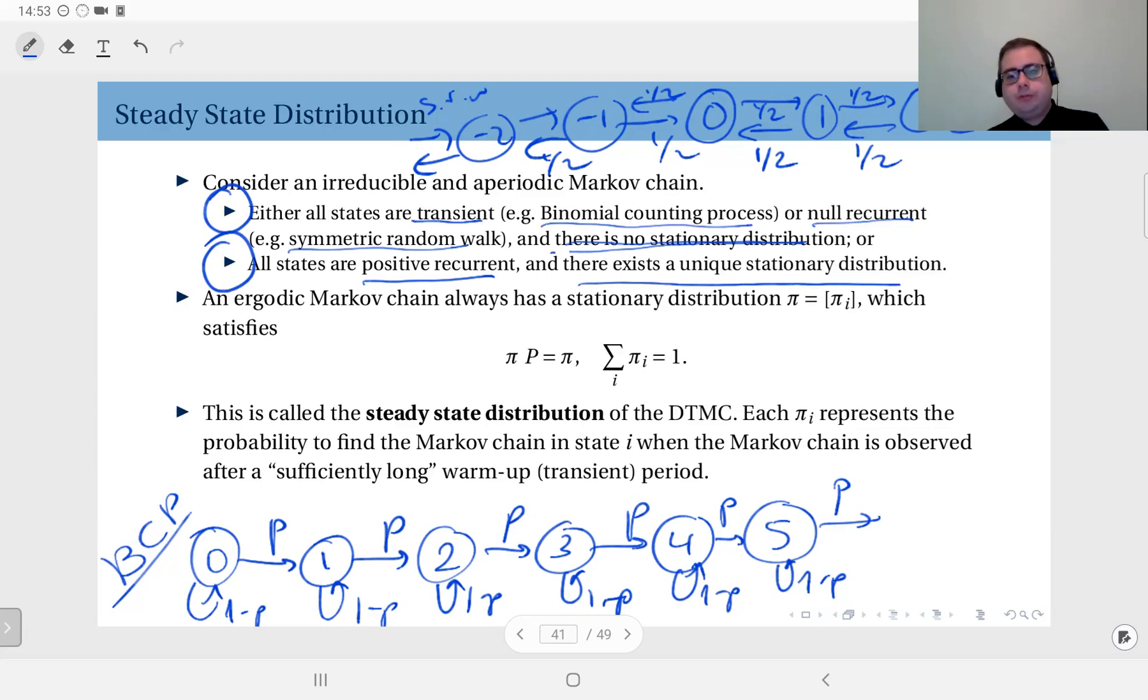Obviously, as we have seen earlier, π P = π is the equation that this distribution satisfies, and this shows that it is a distribution. It sums up to 1. Now we call that a steady state distribution.